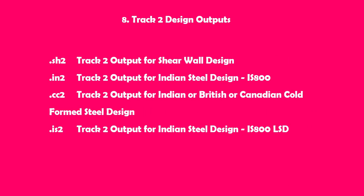The next category is Track 2 design outputs. Based on the code or code provision selected for your particular design, the temporary file will be generated. Currently discussing only the temporary files related to the Indian code: .IS2 represents the output for Indian steel design limit state method. For cold-formed steel design based on Indian, British, or Canadian code, that file extension is .CC2. .IN2 represents steel design IS800 based on working stress. If you have shear wall design information, that will be stored as .SH2 file extension.